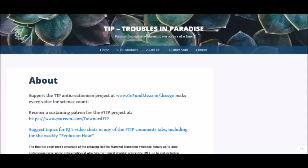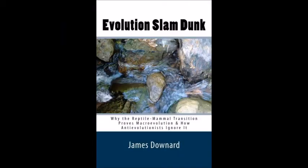R.J. Downard, in his blog Troubles in Paradise, has shown that creationists consistently ignore or avoid upwards of 90% of the available relevant technical data, and many of his findings regarding this fact have been recorded in his book Evolution Slam Dunk.